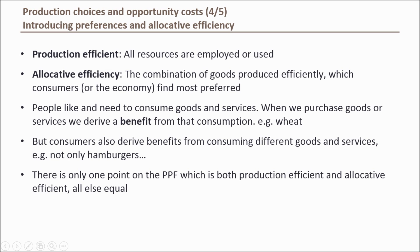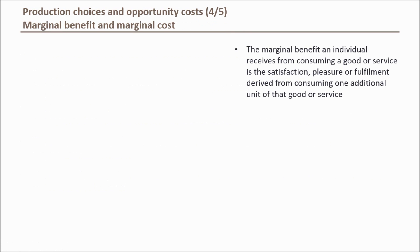Let's understand marginal benefit. When we refer to the term 'benefit' we mean satisfaction or reward, and when we refer to the term 'marginal' we mean the last part, the incremental or the extra one unit. So marginal benefit in our example of wheat or power lines is simply the benefit the economy receives from consuming an extra unit of either good.